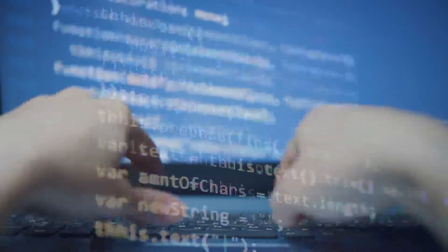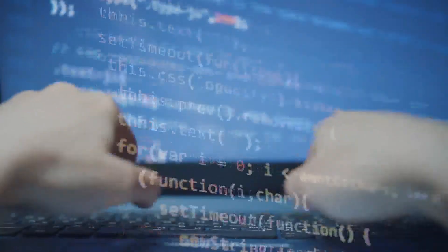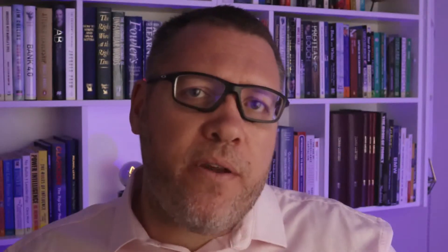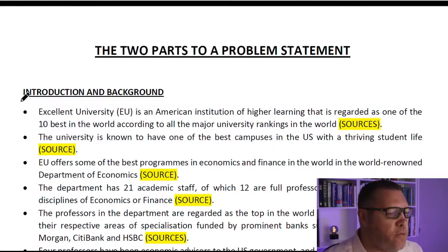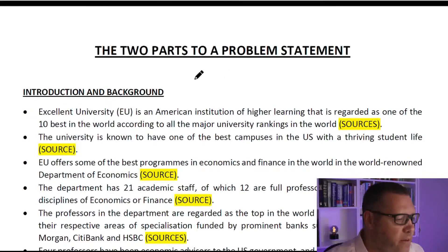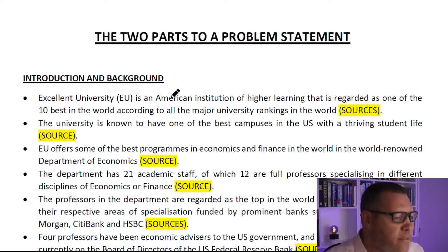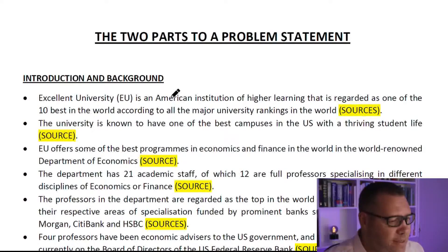So let's look at an example we can work through to see what the two parts are, and also look at the background to see how there is a natural transition from the background to the actual problem statement. Let's look at the two parts to a problem statement. Before we do that, we look at the introduction and background. It's important to set the context, meaning you need to introduce the reader to the background of the problem so that there is a natural transition into the actual problem itself.